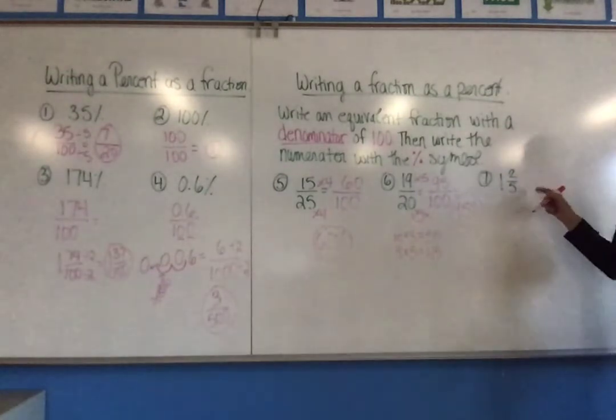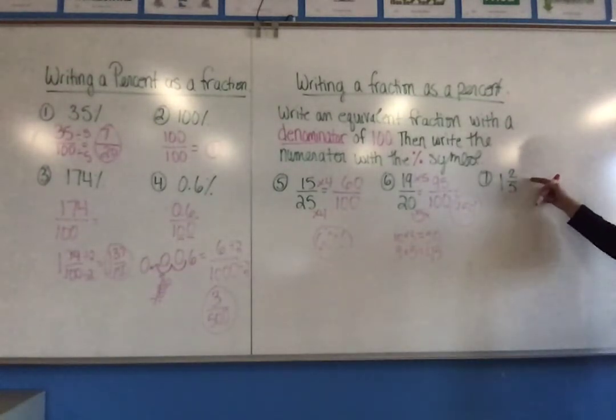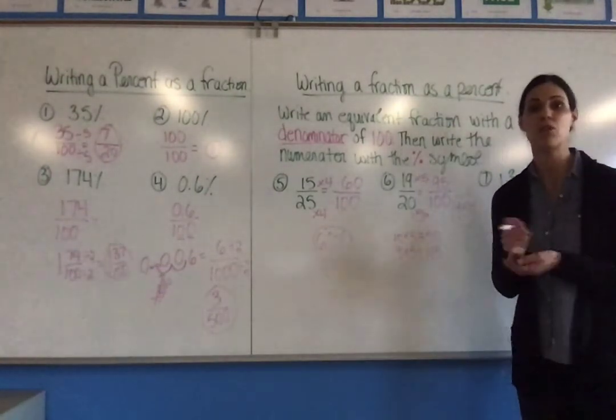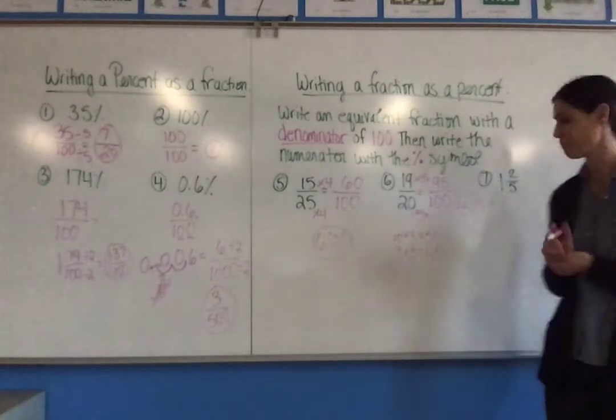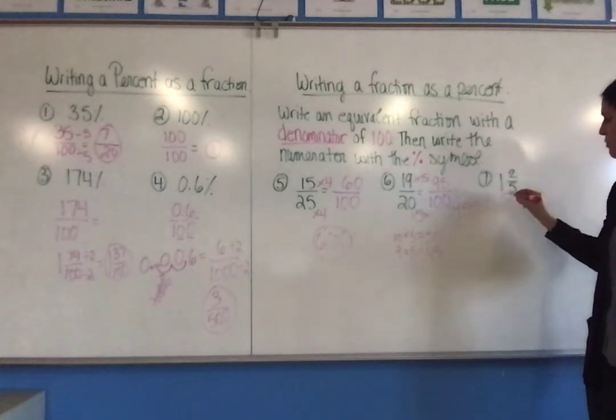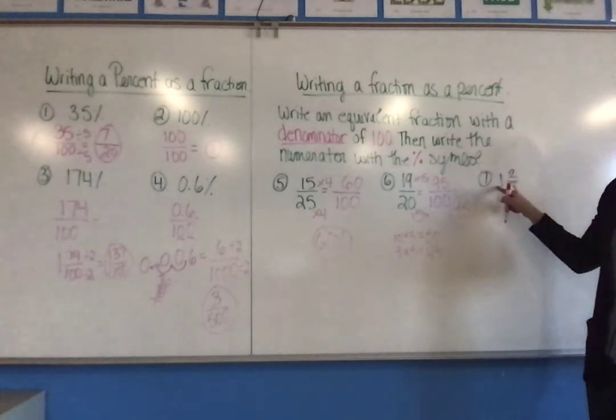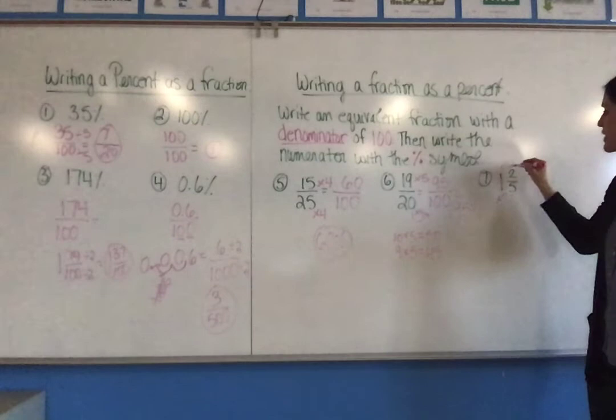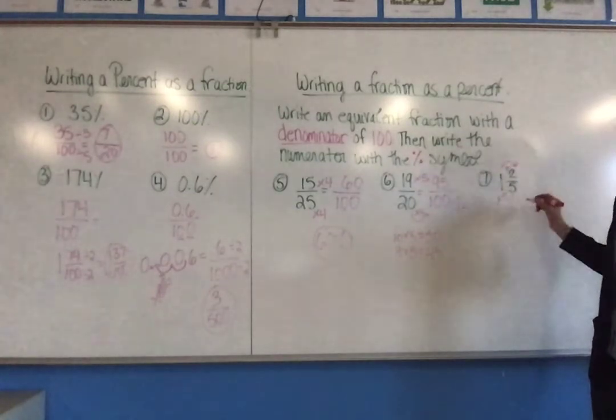In my last example, I have a mixed number. When you have a mixed number, the first thing you have to do is change it to an improper fraction. So to do that, I take the denominator times the whole number, so in this case, 5 times 1, which is 5, and then I take that and add it to the numerator, which is 7.